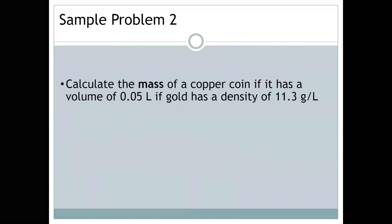I want to do another example problem with you. This says calculate the mass of a copper coin if it has a volume of 0.05 liters, if gold has a density of 11.3 grams per liter. What I want you to pay attention to here is we're not dealing with grams per milliliter. We're dealing with grams per liter. That's okay. You can express density in grams per liter, but you do have to list what unit you are actually using.